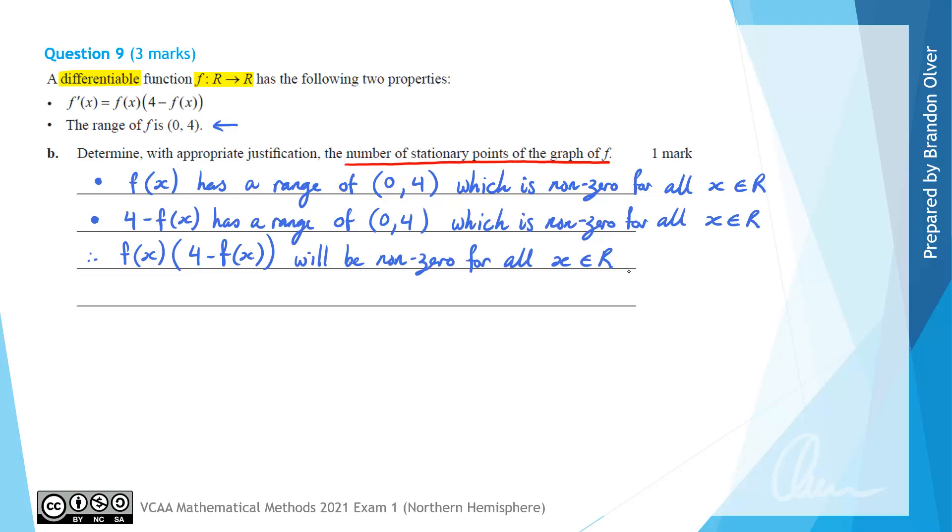So just to reiterate what we just discussed, if f(x) has a range of 0 to 4, which is non-zero for all x, and 4 minus f(x) has a range of 0 to 4, which is non-zero for all x, that means that multiplying those two things together, all the values that come out of that will also be non-zero for all real numbers of x. So therefore, if f(x) times 4 minus f(x) is f'(x), we've just concluded that f'(x) is never equal to 0. Therefore, there's 0 stationary points.